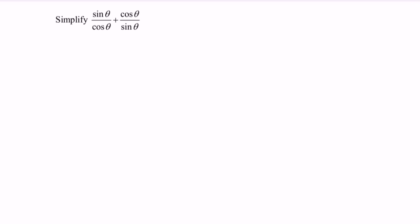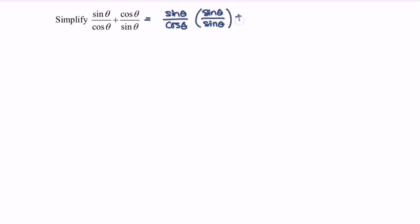Given the expression, we have to equate the denominator. So we have sin θ over cos θ multiplied with sin θ over sin θ, plus cos θ over sin θ, and we need to multiply with cos θ over cos θ.